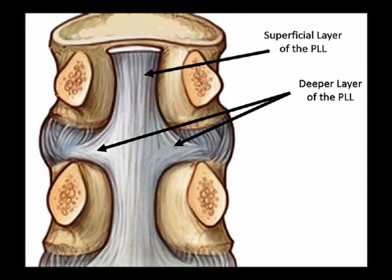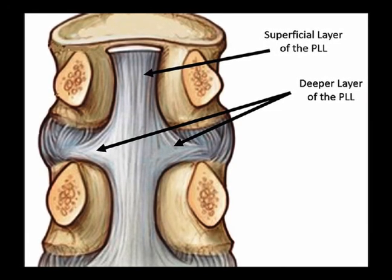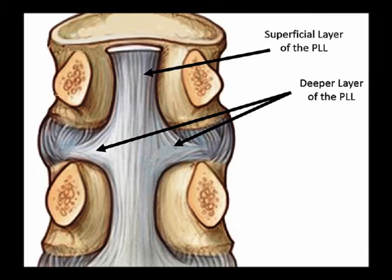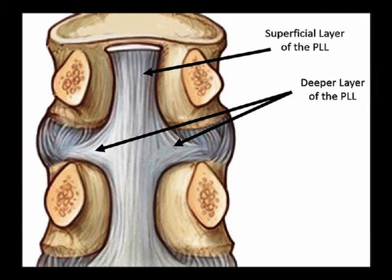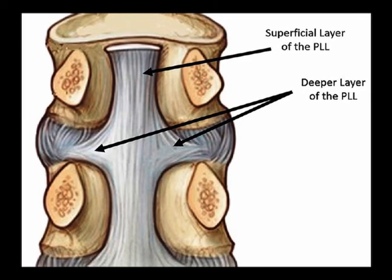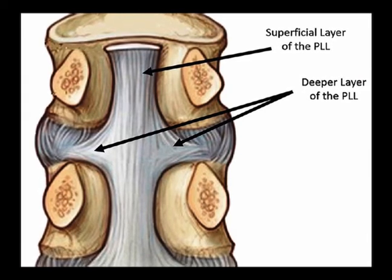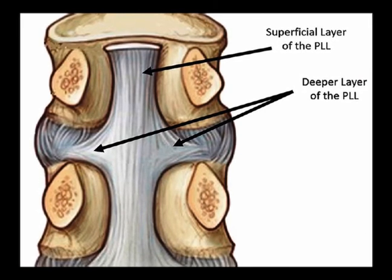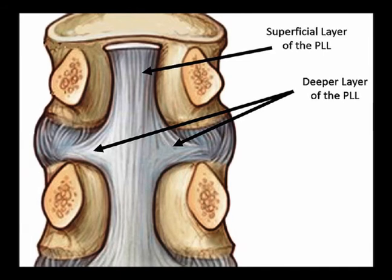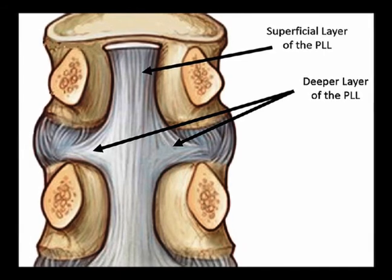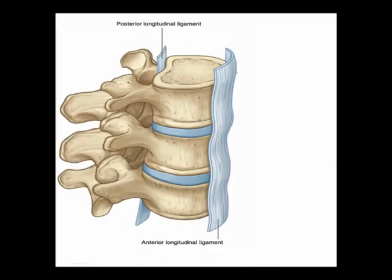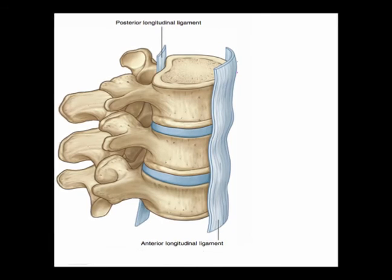Fibers are wider at the intervertebral spaces and are more adherent to the intervertebral disc than to the vertebral body, where they are thinner. This phenomenon is more visible in the posterior longitudinal ligament than in the anterior longitudinal ligament.